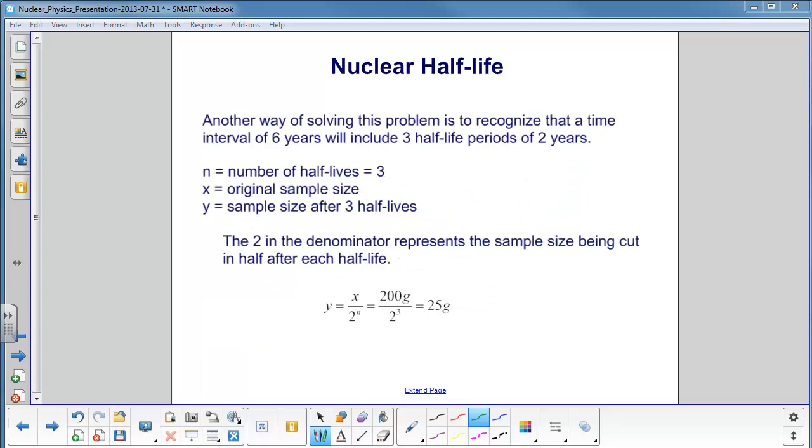Another way of solving this and getting closer to an exponential notation is to recognize that a time interval of six years will include three half-life periods of two years each. Three times two is six.